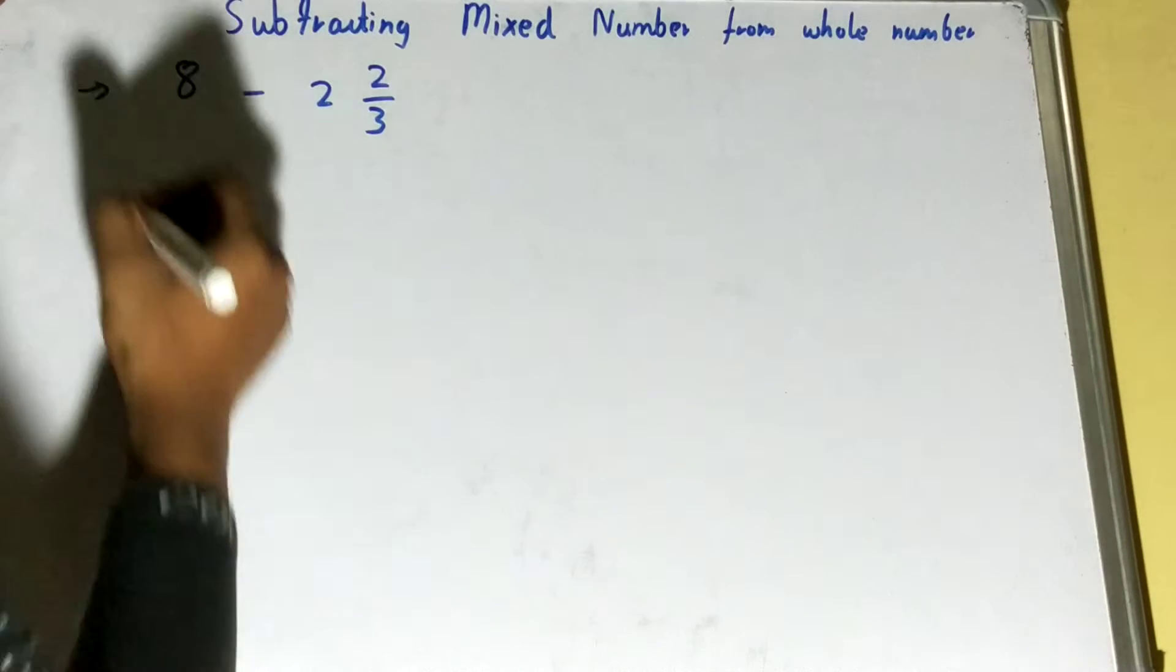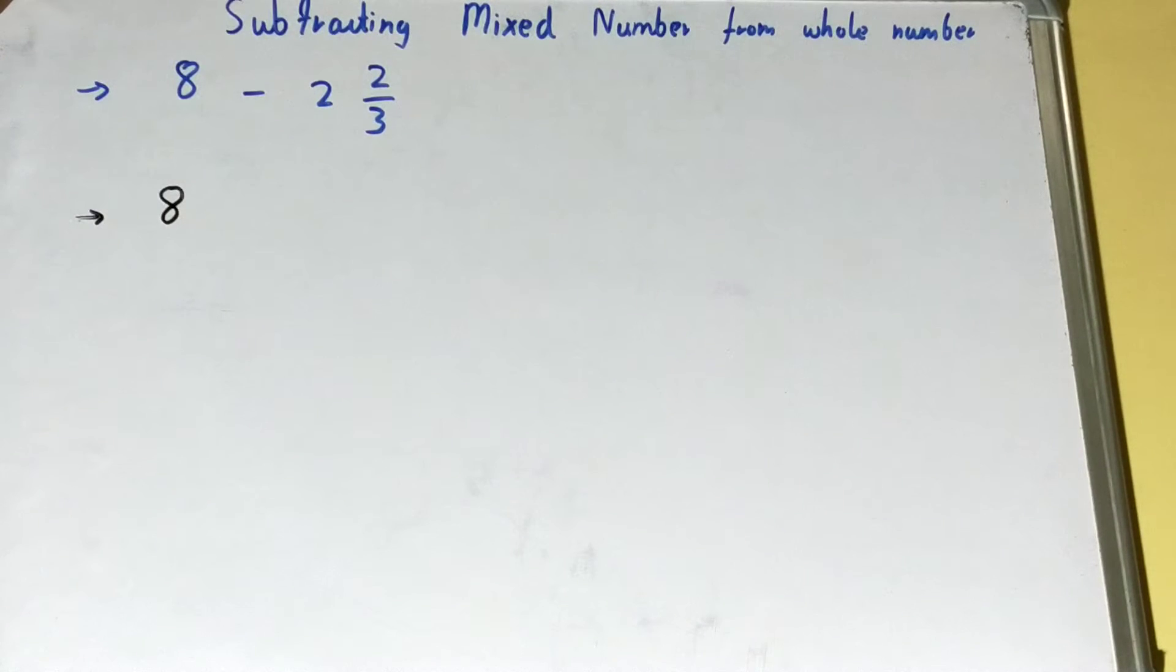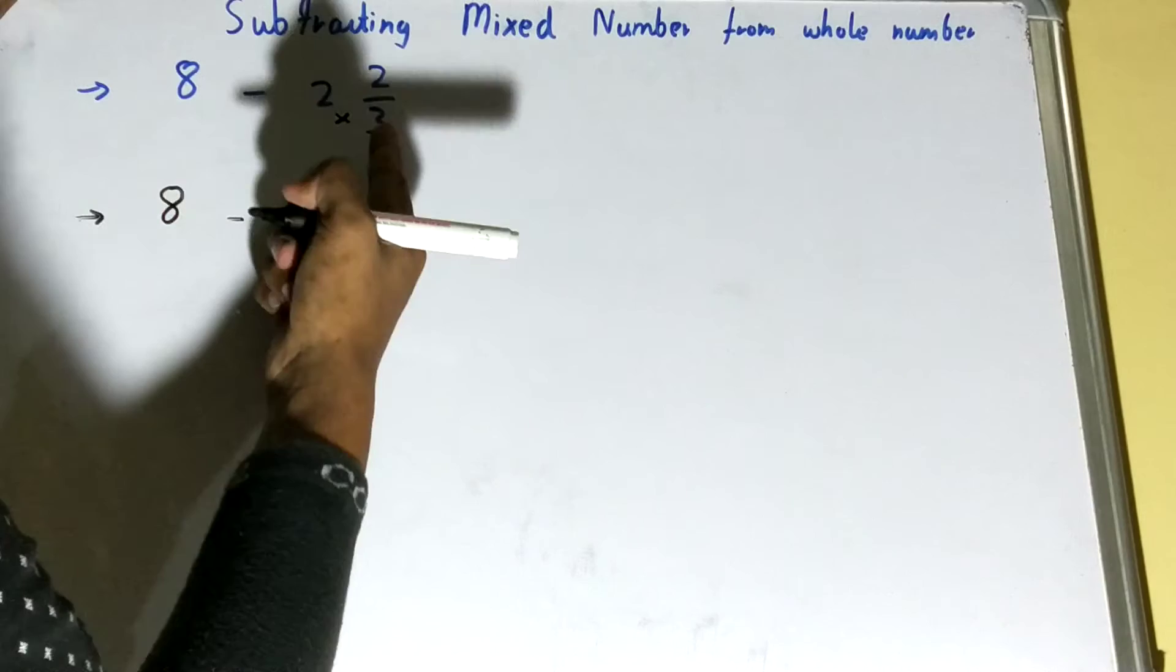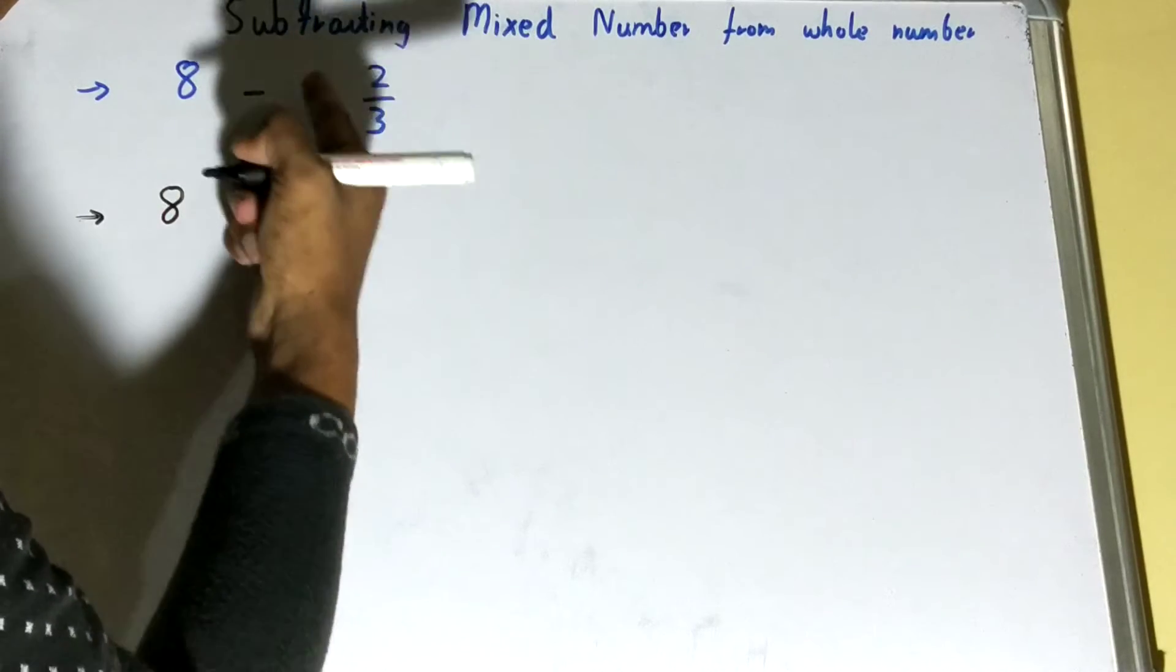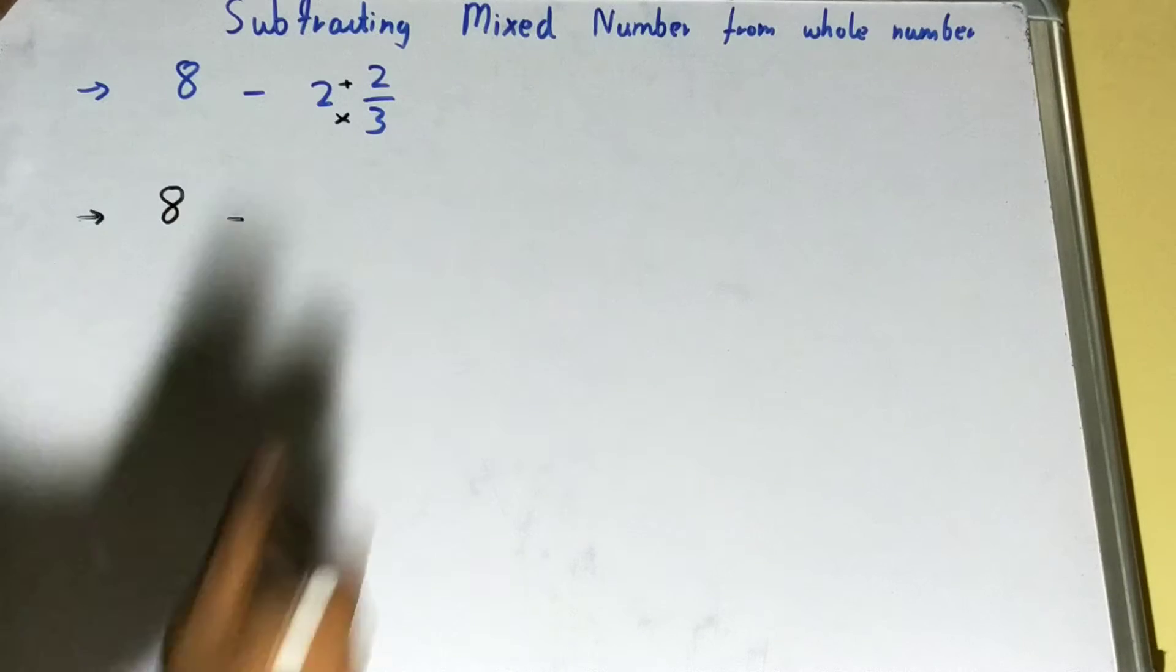Let's start. The first thing you need to do is convert the mixed fraction into an improper fraction. How do we do this? You need to multiply the denominator with the whole and then add the numerator. That is 3 times 2 equals 6, plus 2 will be 8 upon 3.